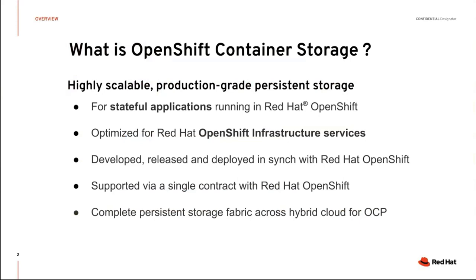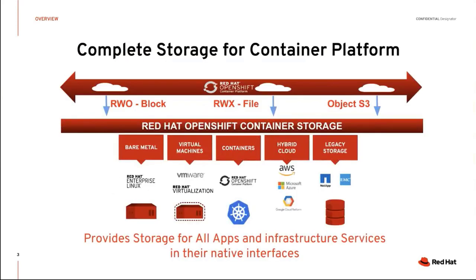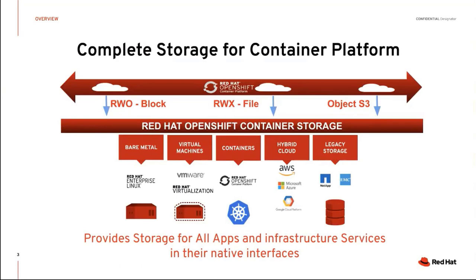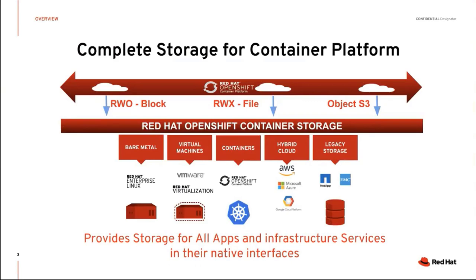In OpenShift Container Storage we have three services: block, file, and object. Today we'll focus on the object storage, but just to give you the full picture — wherever you are working with OpenShift, OpenShift Container Storage will be there and provide these three services by default. No need to configure anything. Simply deploy OpenShift Container Storage and you'll get these three services and all the value mentioned.